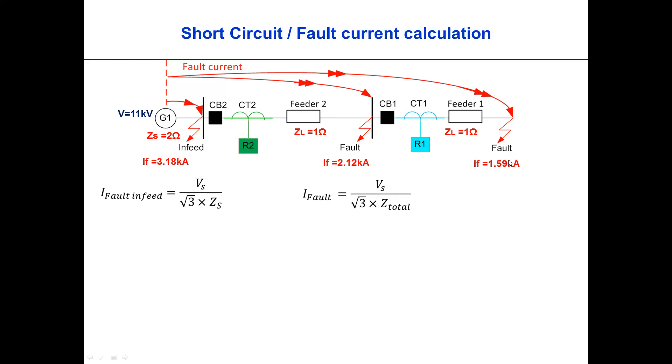And then finally, the fault current at remote end is calculated from the total impedance, which is source impedance plus line impedance of feeder two plus line impedance of feeder one. So now you can see the fault current is 1.59 kA.